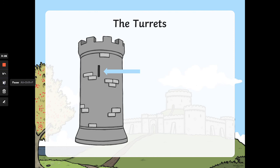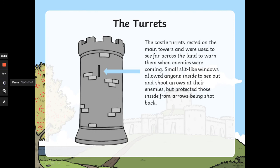The turrets. The castle turrets rested on the main towers and were used to see far across the land to warn them when enemies were coming. Small slit-like windows allowed anyone inside to see out and shoot arrows at their enemies, but protected those inside from arrows being shot back.